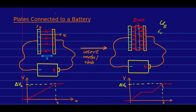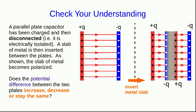Let's have a question so you can see how you're understanding. Do exactly the same thing, but with isolated plates. You know that the charge on the plates is fixed. Also, the charges on the metal slab have to be the same magnitude as the charges on the plate — I'll leave you to think about why that must be true. Now think about whether the potential difference between the two plates increases, decreases, or stays the same.